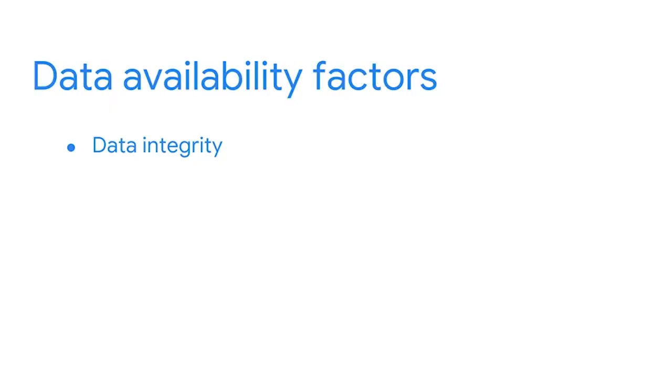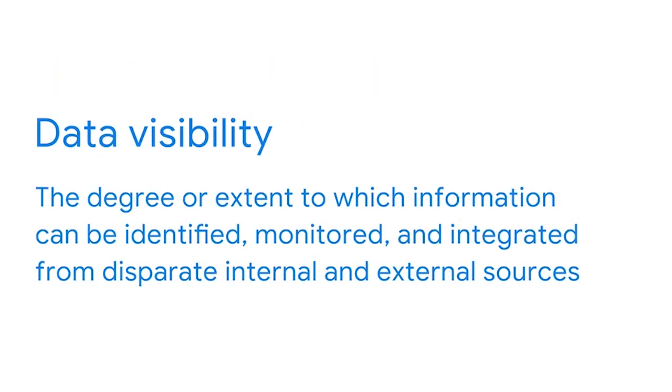The second data availability challenge has to do with visibility. Data visibility is the degree or extent to which information can be identified, monitored, and integrated from disparate internal and external sources. For instance, employees working in a company's operations department might have no idea what data is stored in the communications department. Or someone working in the logistics unit might have data files that contain lots of great information, but no one else even knows they exist.